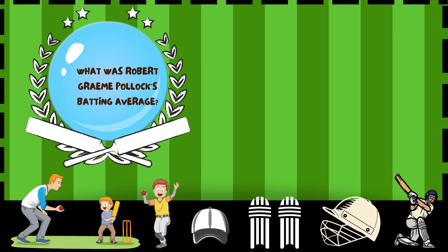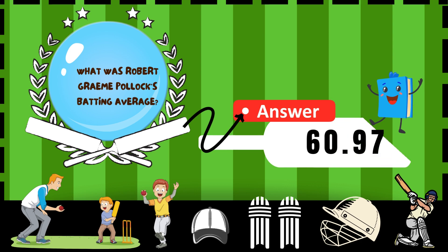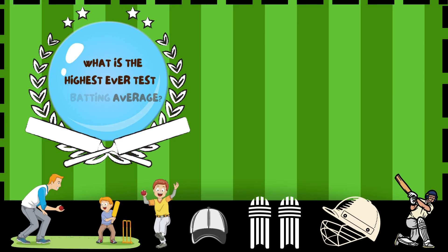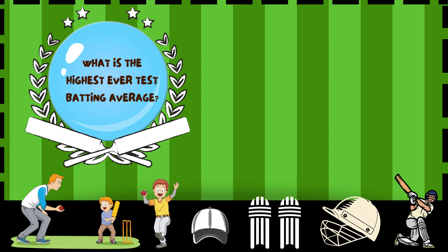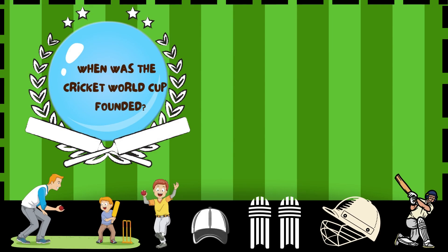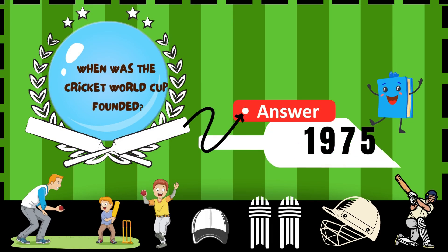What was Robert Graham Pollock's batting average? 60.97. What is the highest ever test batting average? 99.94. When was the Cricket World Cup founded? 1975.